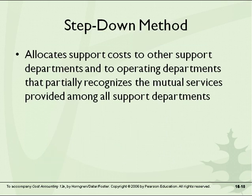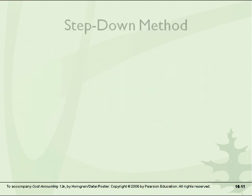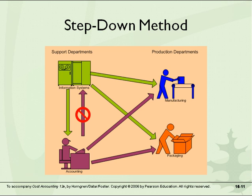The step-down method allocates support costs to other support departments as well as to operating departments, partially recognizing that there is mutual service provided among departments. There's only one-way interaction between support departments prior to the allocation. For example, we recognize that accounting is also a user of IT services just as production departments use it. IT gets transferred to accounting, and once the IT cost is assembled within the accounting cost pool, then we can allocate the accounting cost to production and packaging.